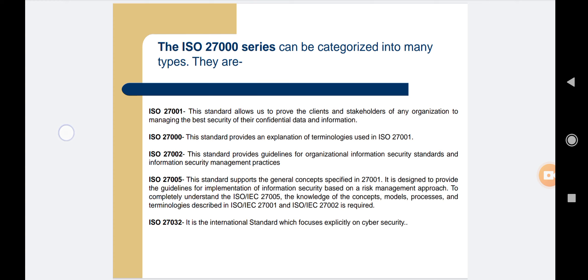The fourth is ISO 27005. This standard supports the general concepts specified in ISO 27001 and is designed to provide guidelines for implementation of information security based on a risk management approach. To completely understand ISO 27005, knowledge of the concepts, models, processes, and terminologies described in ISO 27001 and 27002 is also required. This standard is applicable for all kinds of organizations, such as non-government organizations, government agencies, and commercial enterprises.